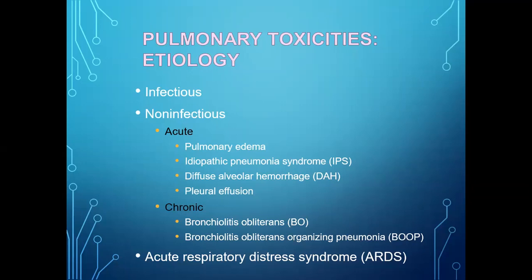Under acute non-infectious causes, we see pulmonary edema, idiopathic pneumonia syndrome (IPS), diffuse alveolar hemorrhage (DAH), and pleural effusion. Under chronic, we see bronchiolitis obliterans, bronchiolitis obliterans organizing pneumonia (BOOP), and acute respiratory distress syndrome.